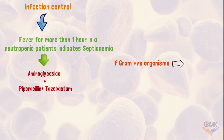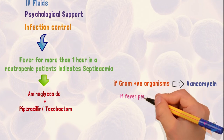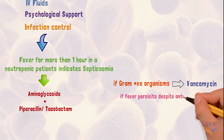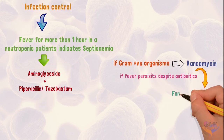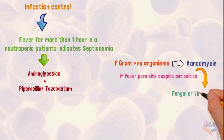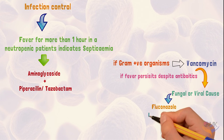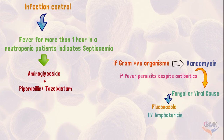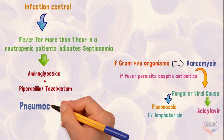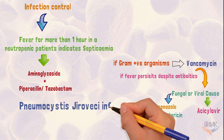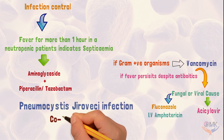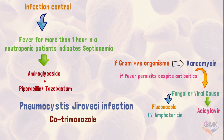For gram-positive organisms, vancomycin is indicated. If fever persists despite antibiotics, a fungal or viral cause is suspected. For fungal infection, fluconazole and IV amphotericin B are given, whereas for viral infection, acyclovir is given. In case of Pneumocystis jirovecii infection, co-trimoxazole is the drug of choice.